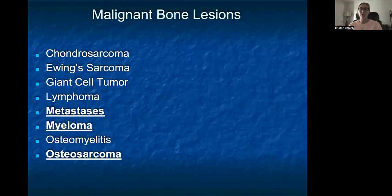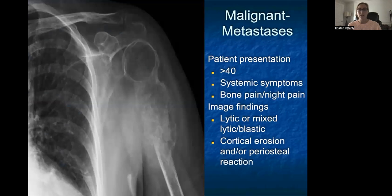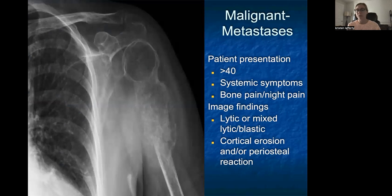There are several malignant bone lesions, but the three we will focus on are metastases, myeloma, and osteosarcoma. Starting with metastases: patients are generally older, average age usually over 40, and may have systemic symptoms such as fevers, chills, night sweats, and often bone pain and nighttime pain. Image findings may consist of lytic or mixed lytic and blastic lesions, often with erosion through the normal cortex and some periosteal reaction. Treatment will depend on the primary cancer and individual patient characteristics.